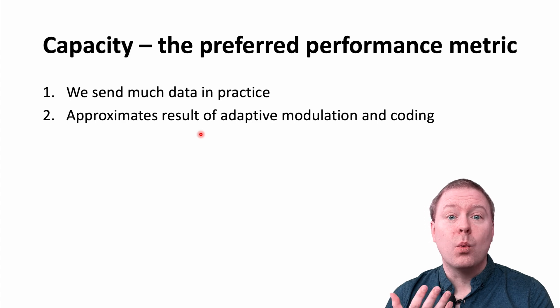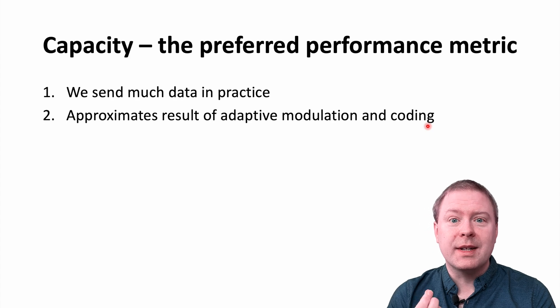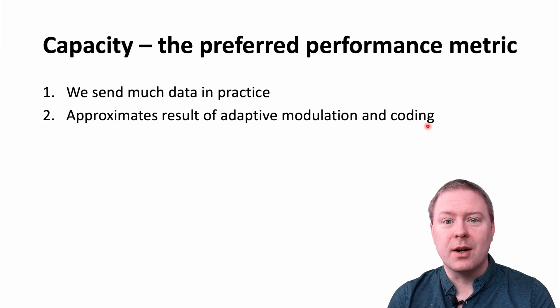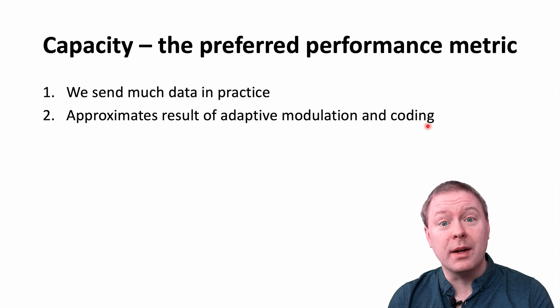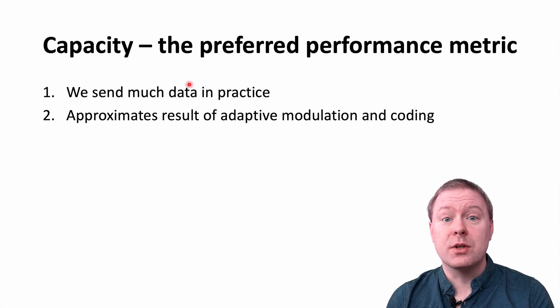The second one is that when we are performing adaptive modulation and coding in practical systems, we are not getting a large bit error ratio. We are picking the modulation and coding to get the small one, and then we are achieving a data rate close to the capacity.